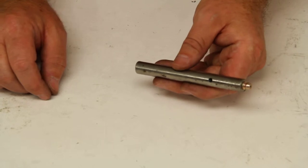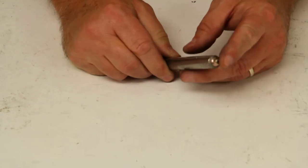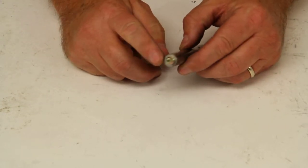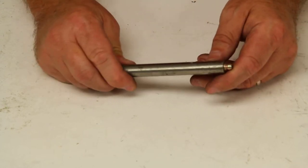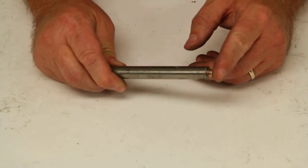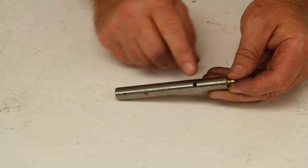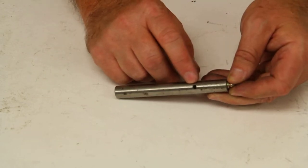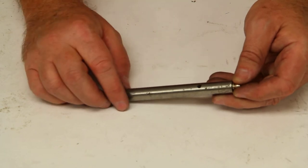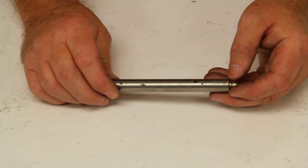This is a greasable hinge pin, which means it has a Zerk fitting right here on the very end. You can attach your grease gun to the end of this fitting and pump grease into the inside, which will come out this hole right here and spread all along the length of the hinge pin, which will lubricate the total hinge.